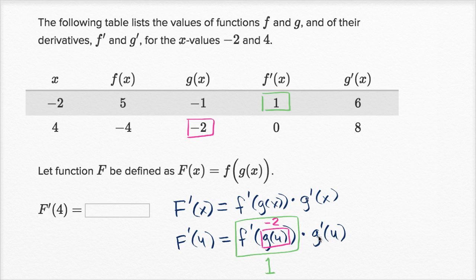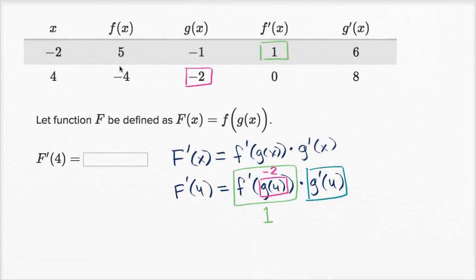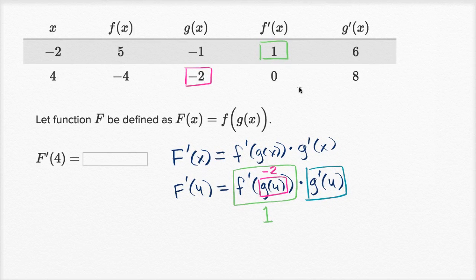And now we just have to figure out what g prime of four is. Well, let me circle this, g prime of four, when x is equal to four, and I'll scroll down a little bit. When x is equal to four, g prime takes on the value eight.